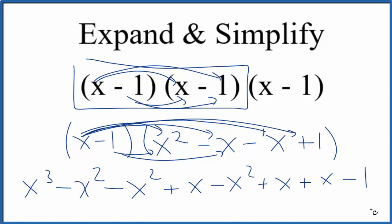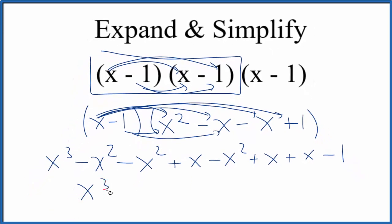So now we just need to combine like terms, and we'll have expanded and simplified x minus 1 cubed. So x to the third, we only have one of those. Then we have negative x to the second, we have one, two, three of those. So we'll have negative 3x to the second.